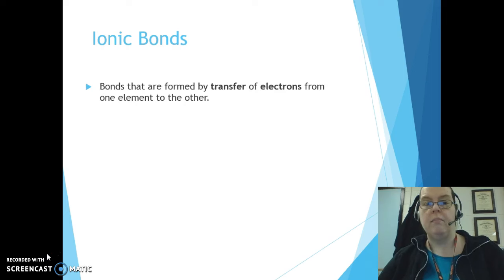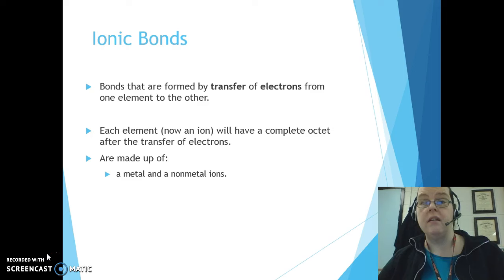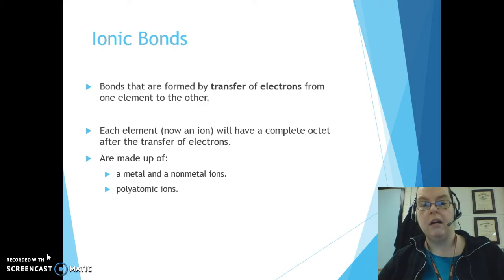Ionic bonds are bonds that are formed by transferring electrons from one element to another. That means each element will need an octet after transferring electrons. These are made up of a metal and nonmetal ions — a cation and anion. There's also something called a polyatomic ion we'll introduce later. Polyatomic basically means exactly what it says: poly meaning many, atomic meaning atom — so it's a many-atomed ion. Right now we're going to stick with binaries until we get more familiar with those.